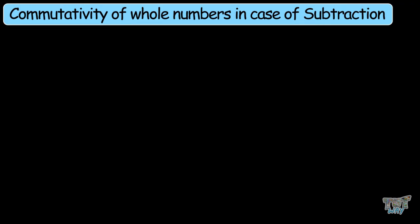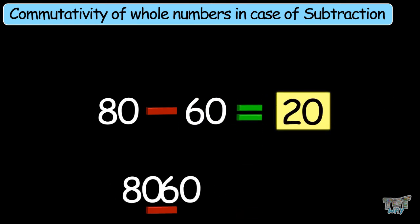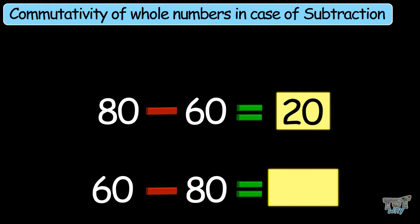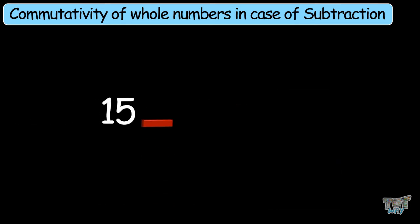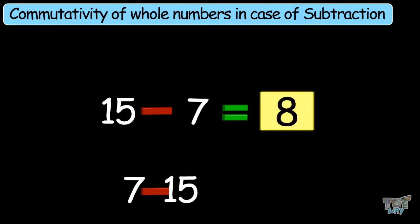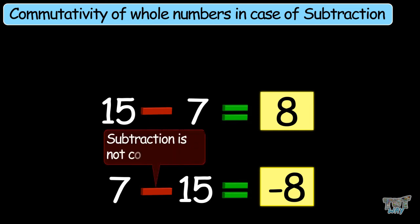Now let's try it with subtraction. Can we subtract numbers in any order? 80 minus 60 is 20. Now 60 minus 80 — what will the answer be? The answer will not be 20; it is negative. So we cannot subtract numbers in any order. We can say subtraction is not commutative.